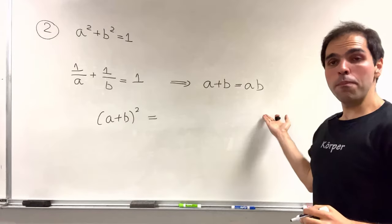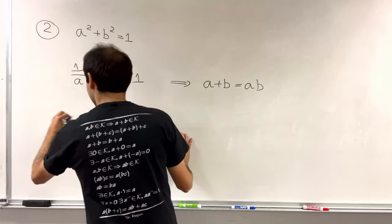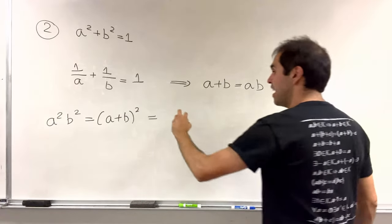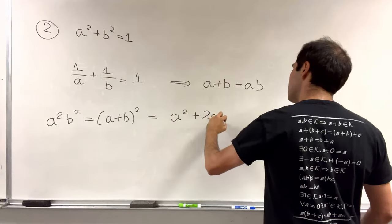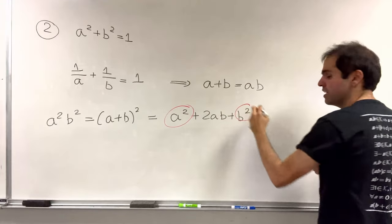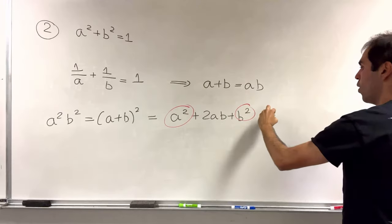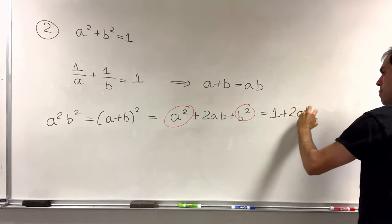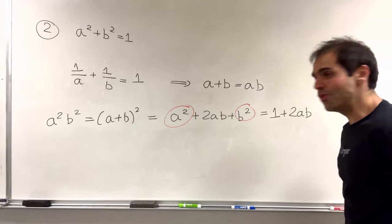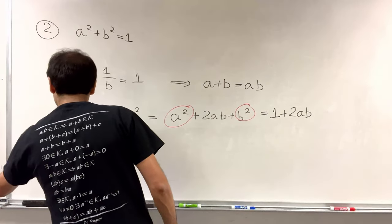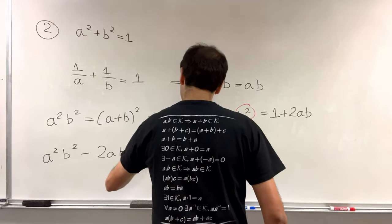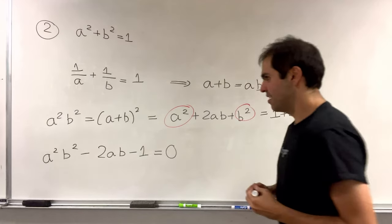So a plus b squared, that is a squared b squared. On the other hand, expanding this out, we get a squared plus 2ab plus b squared. Now a squared plus b squared, that is 1. So we get 1 plus 2ab. And putting everything on the left hand side, we get a squared b squared minus 2ab minus 1 equals 0.